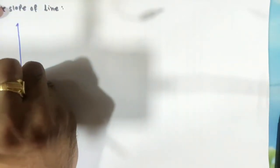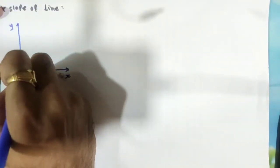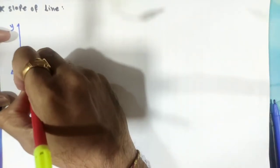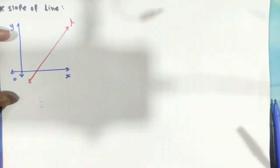Slope of a line. So what is the slope of a line? Consider a two-dimensional coordinate system with a y-axis, x-axis, and origin O. One line is given in this two-dimensional coordinate system. Suppose this given line is L. So here we have to define the slope of the line.